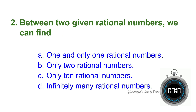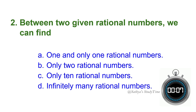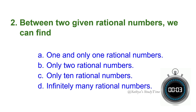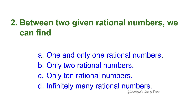Second question: Between two given rational numbers, we can find — four options are given. Your time starts now. The answer is: indefinitely many rational numbers. We can find infinitely many rational numbers between any two rational numbers.